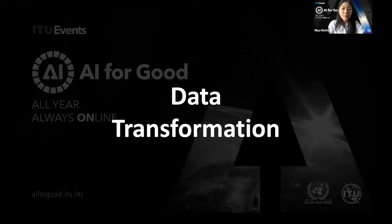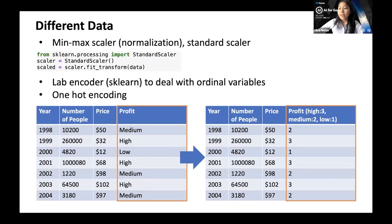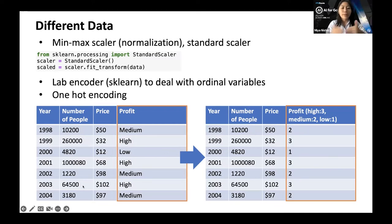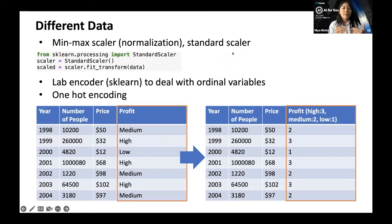Next we have data transformation — the idea of changing our data values. Oftentimes, datasets have values of different scales. For example, the number of people might be in the thousands and ten-thousands, while price is in the tens and hundreds. Data transformation changes these values to fit a certain scale. The two techniques I'm introducing today are the min-max scaler and the standard scaler. The min-max scaler scales data to a set minimum and maximum — often zero and one. The standard scaler standardizes so that the mean is zero and variance is one. We import the standard scaler from sklearn.preprocessing, create our scaler, and fit and transform our data.